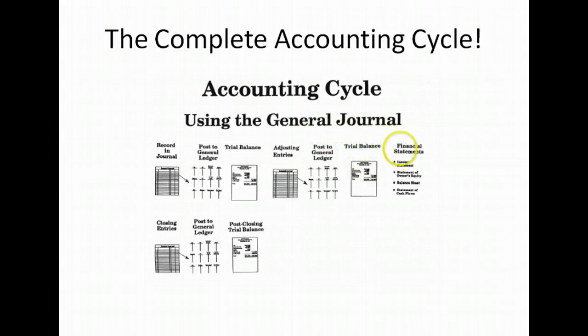From that you can make financial statements. You need to do that before you make closing entries in the general journal, post it on the next available line, which you then post to the general ledger and prepare post closing trial balance.